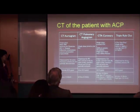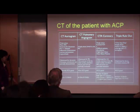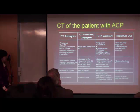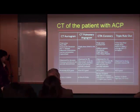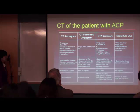The CT aortogram is a triple-phase study timed to show the best enhancement in the aorta to look for dissections, aneurysms, and intramural hematomas. The pulmonary angiogram is a single-phase study timed to show opacification of contrast in the pulmonary arteries to look for emboli. The coronary CT study is usually an ECG-gated study with a small field of view, requiring rigorous heart rate control because the coronary arteries are not very big. Recently, we also have the triple rule-out, which attempts a one-stop assessment of all these structures simultaneously. Radiologists don't really like to do these studies unless absolutely necessary.